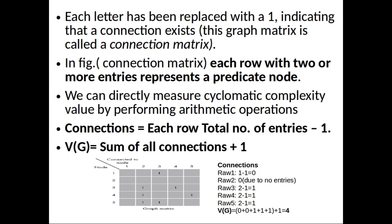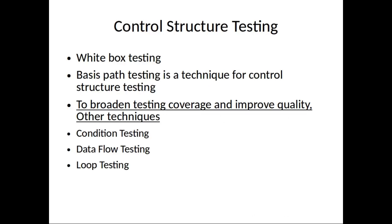Another method of white box testing is control structure testing. The basis path testing technique described is one of a number of techniques for control structure testing. Other variations are discussed to broaden testing coverage and improve quality. Other control structure testing types include condition testing, data flow testing, and loop testing.